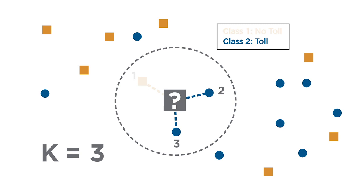Here, notice two of the data points are labeled as toll, and one is labeled as no toll. Since the majority of the neighbors are toll, the new data point is classified as toll. This is also known as a majority voting mechanism.